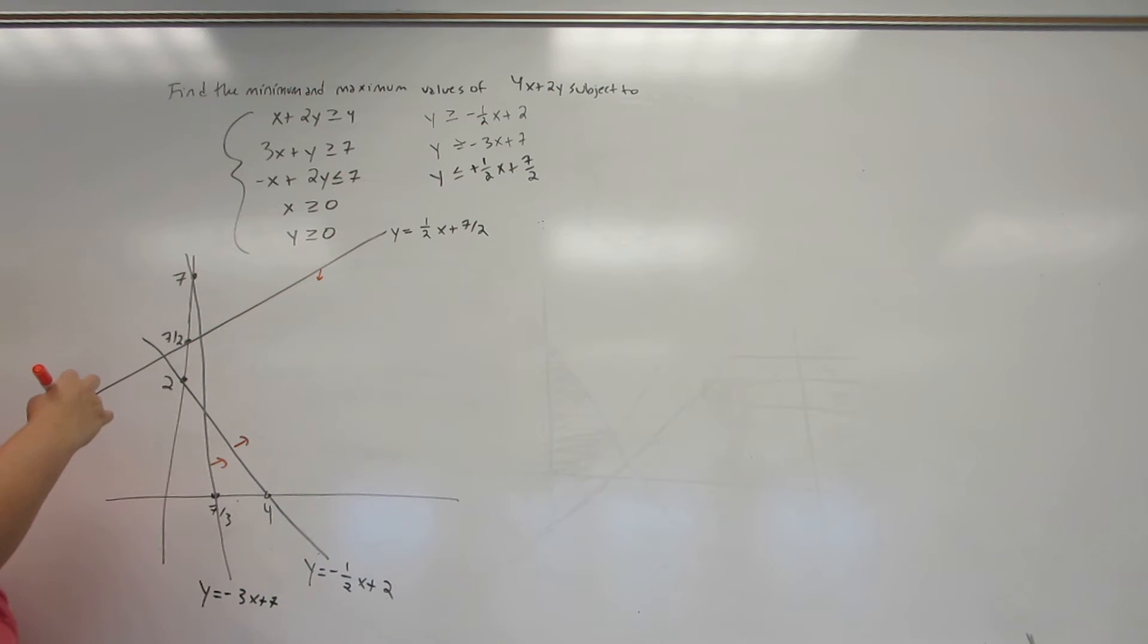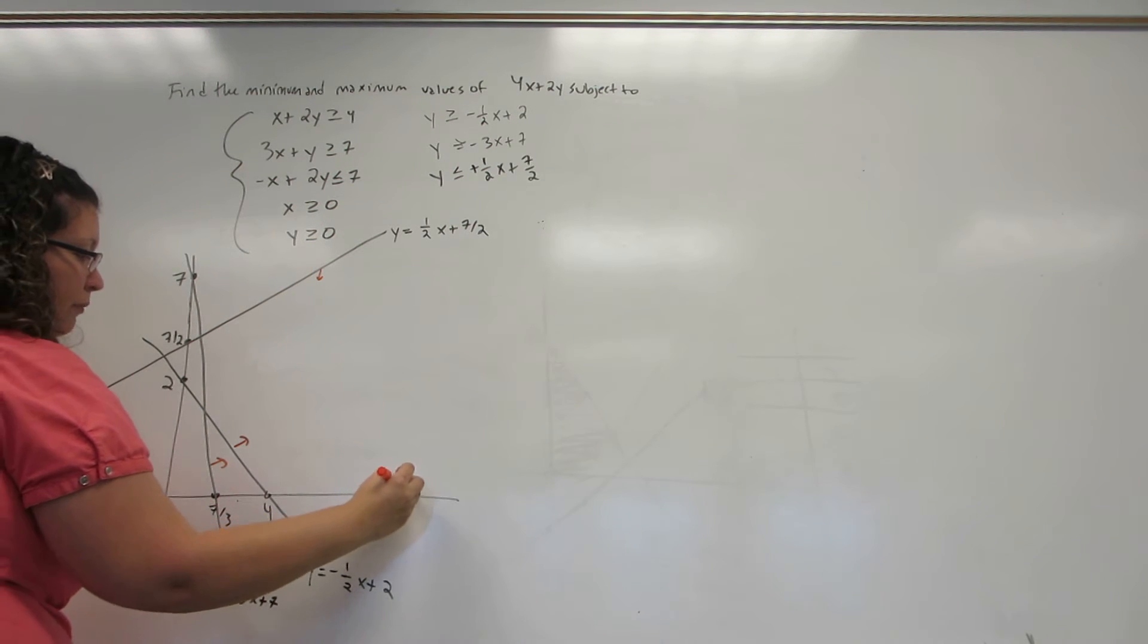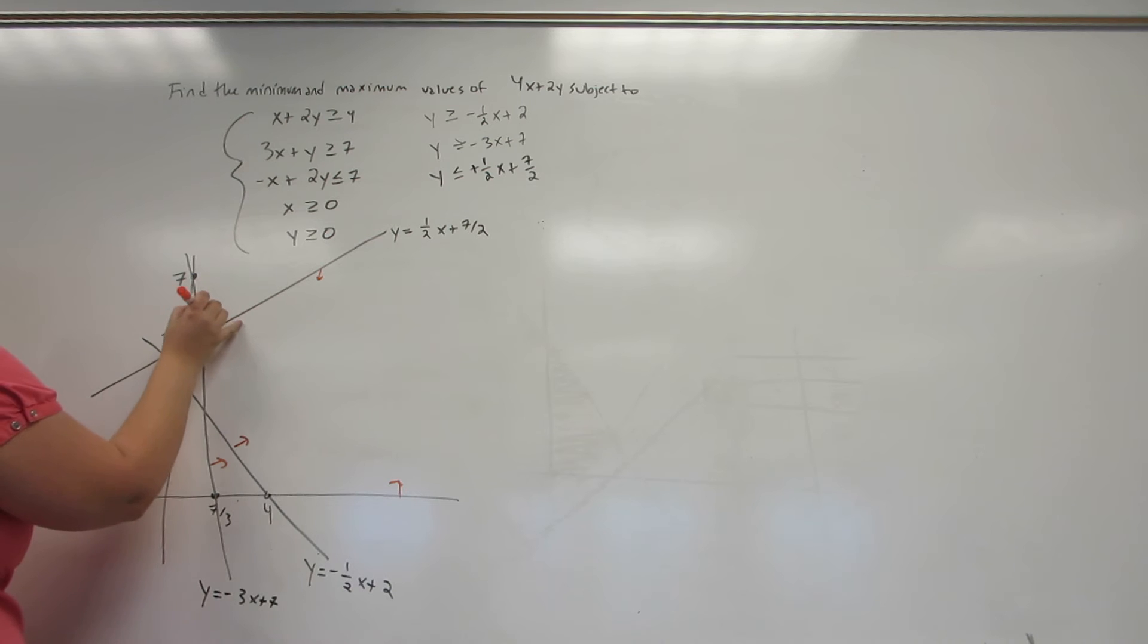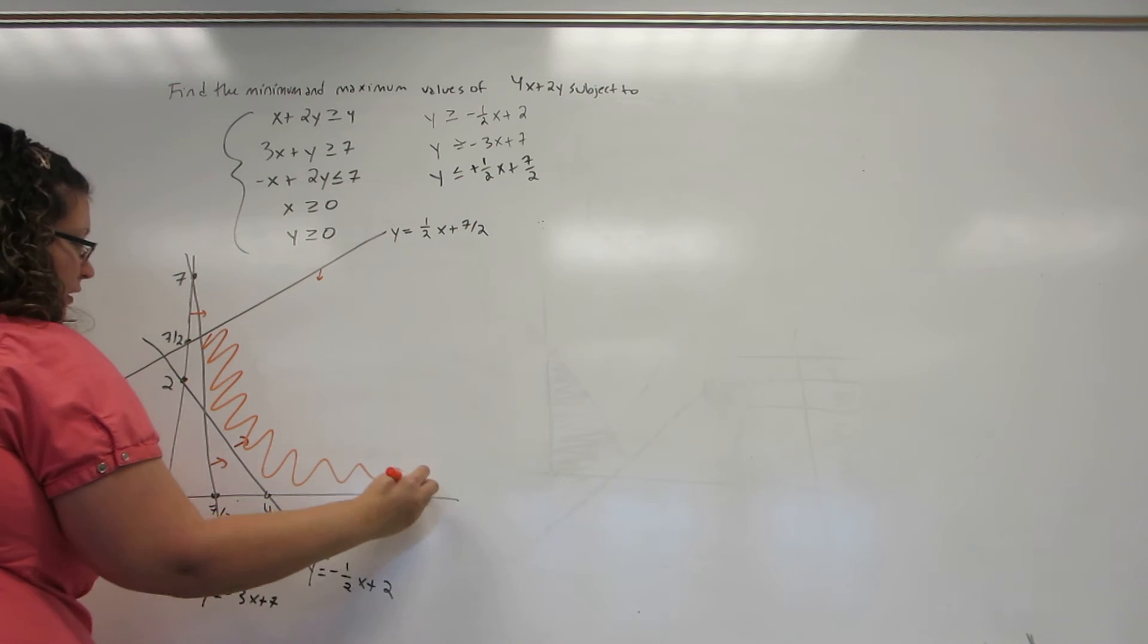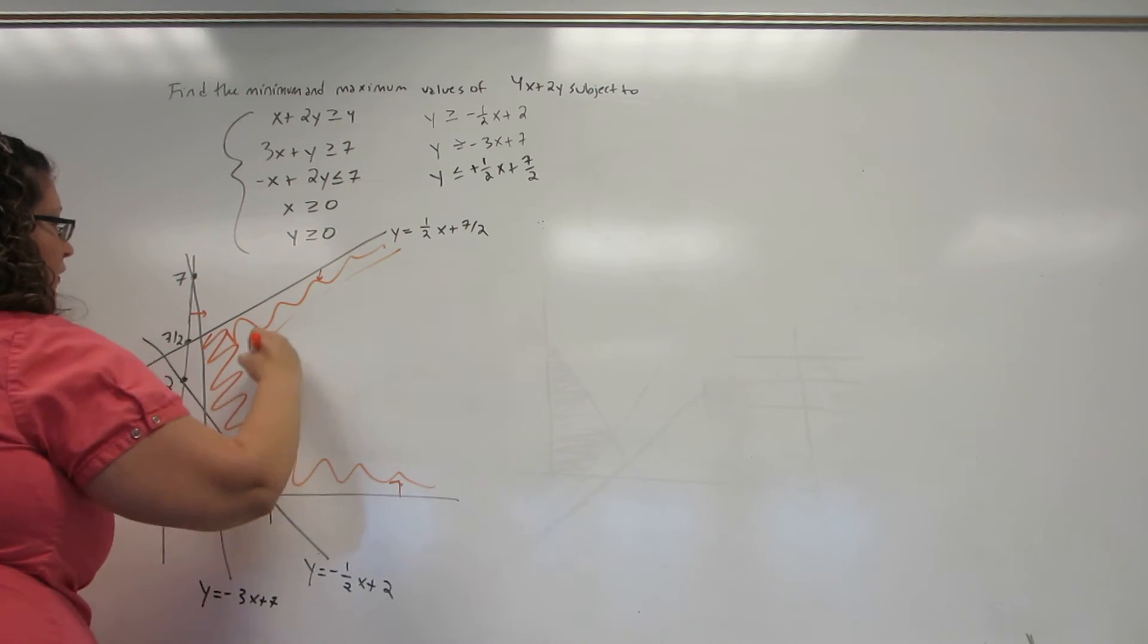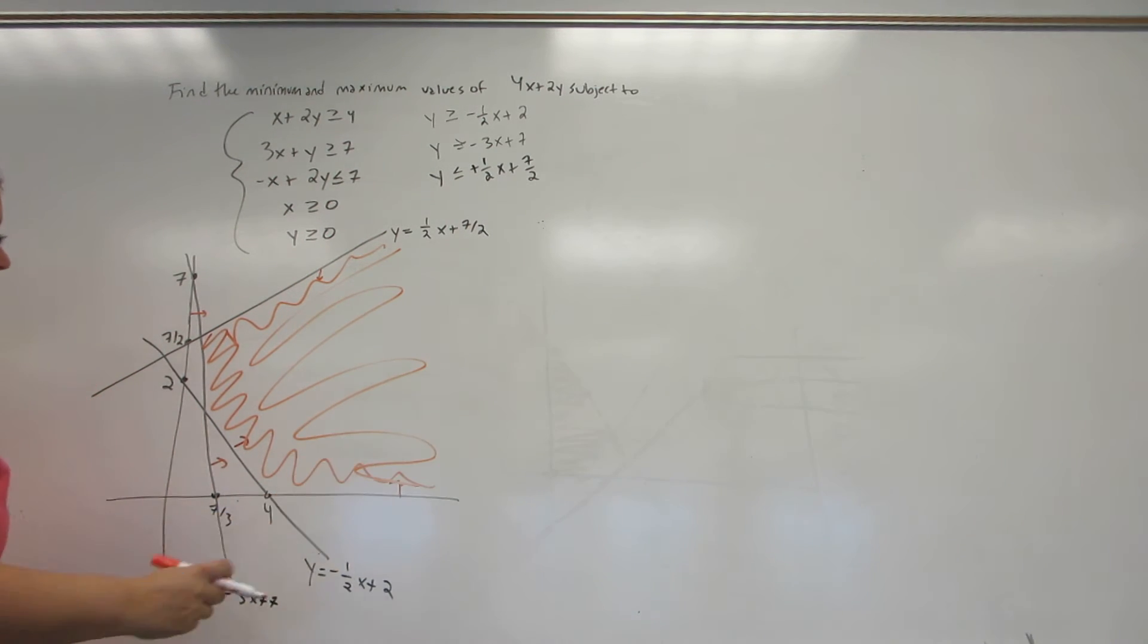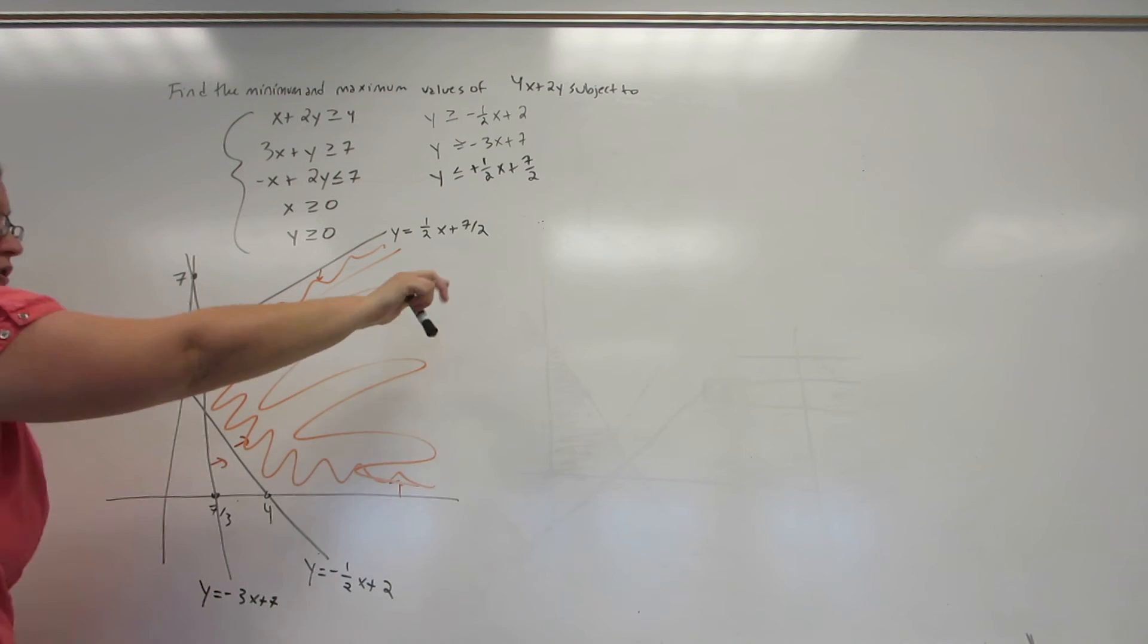And then I'm below the half X plus 7 halves, and above the X-axis to the right of the Y-axis. So I see that my region looks like this. You'll notice that it keeps on going on forever in this direction.